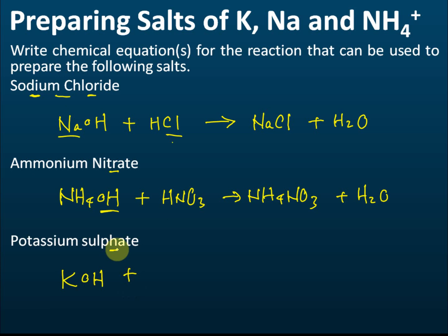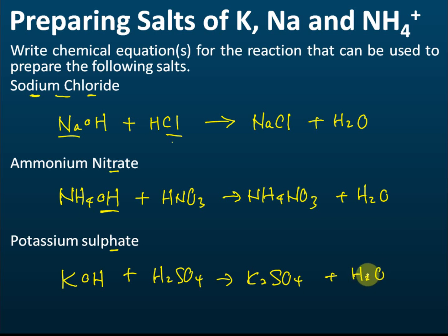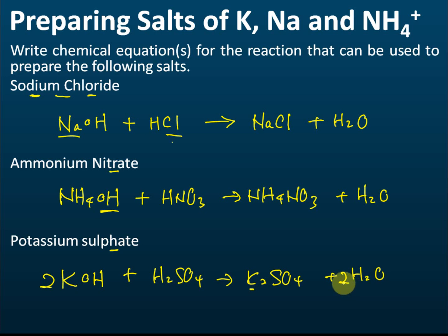The product of potassium hydroxide reacting with sulfuric acid is potassium sulfate and water. This equation is not yet balanced because there are two potassium atoms, so we need two KOH molecules. Two KOH reacting with H₂SO₄ produces K₂SO₄ and two water molecules. Always remember: to prepare potassium, sodium, or ammonium salts — which are soluble — use neutralization only.